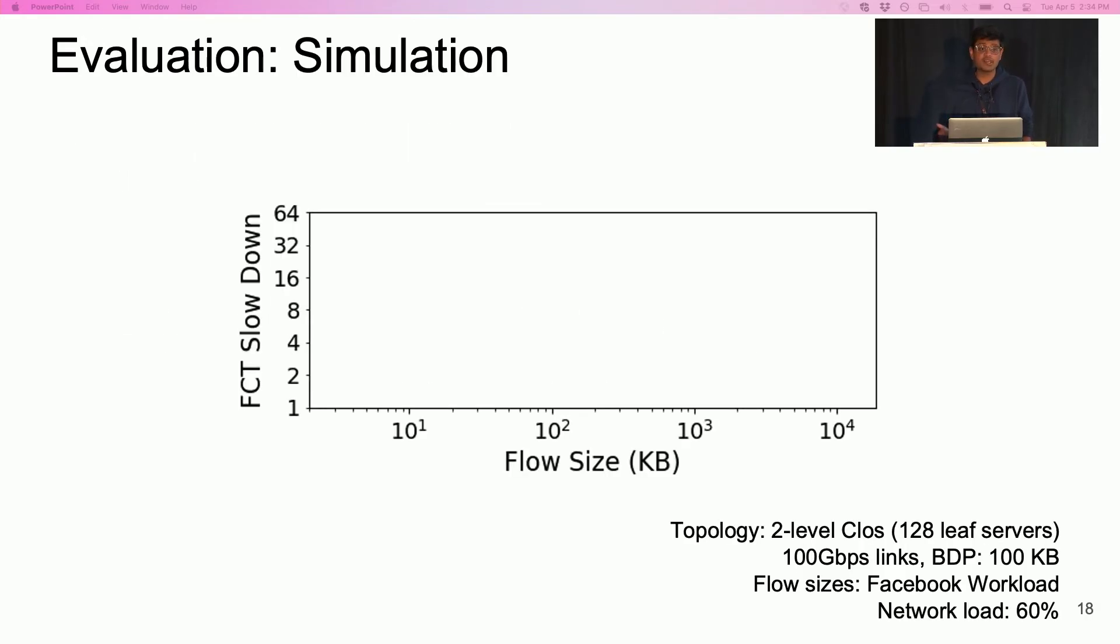This figure shows the performance of various schemes in a simple Clos topology. For each scheme, we report the 99th percentile FCT slowdown across different flow sizes. FCT slowdown for a flow is simply flow completion time of the flow normalized to its best possible completion time. The goal here is to achieve low FCT slowdown. The baseline comparison schemes are DCTCP and HPCC.